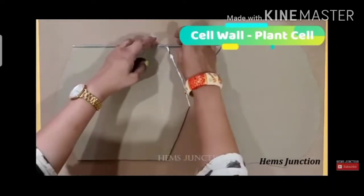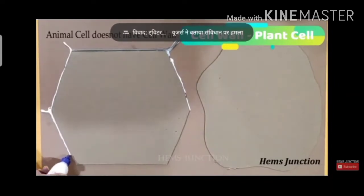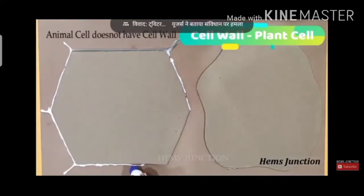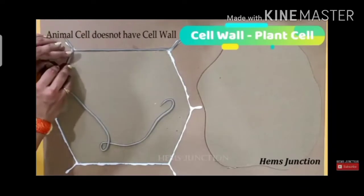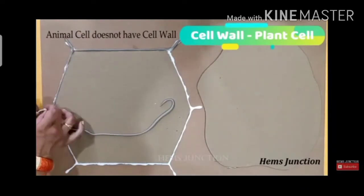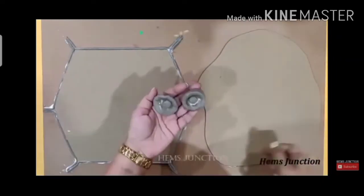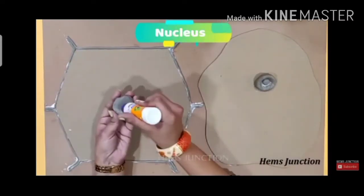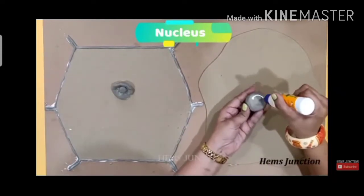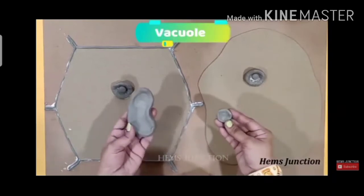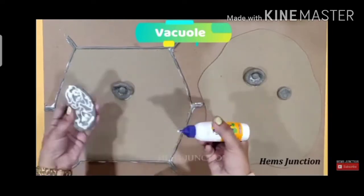Now, by using fevicol, you will paste the organelles. Remember that the animal cell does not have a cell wall — the cell wall is present only in plant cells. So you will roll clay and make the boundary of the plant cell. This clay boundary works just like a cell wall, and you will also place the nucleus in the center.